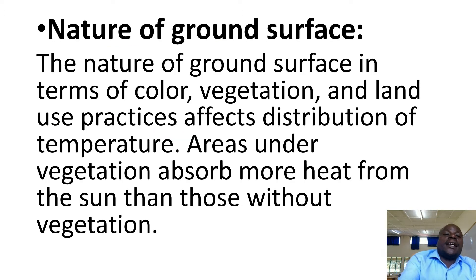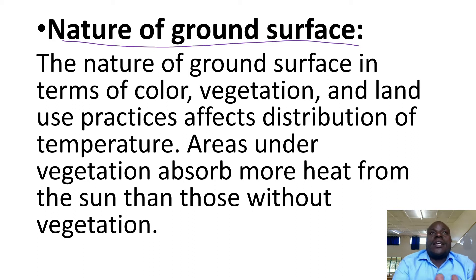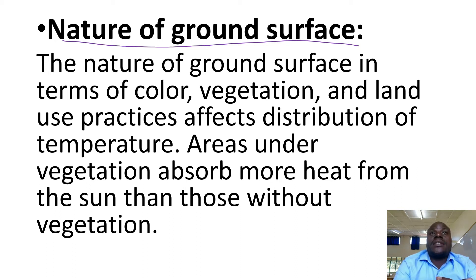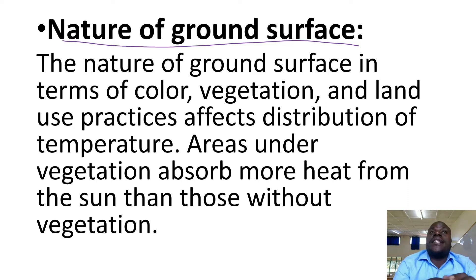We have the nature of the ground surface. This can be explained in many ways. One student may look at vegetation cover, another may look at man's activities, and others may look at the color of the ground surface. For example, dark and black surfaces absorb more heat from the sun, and therefore these areas are likely to have high temperatures compared to bright surfaces which reflect heat and light.